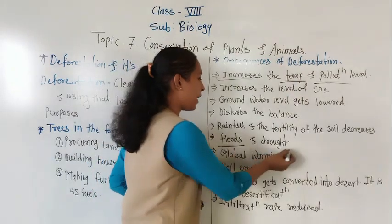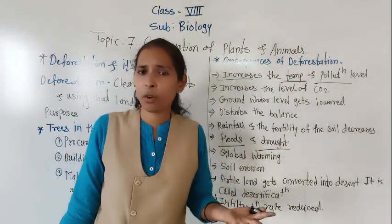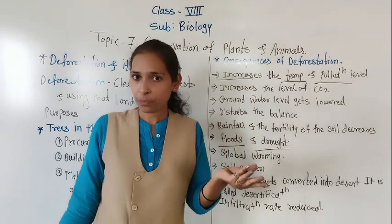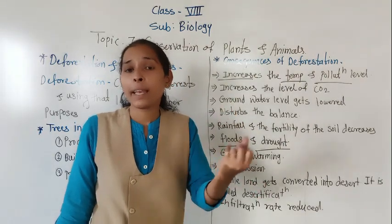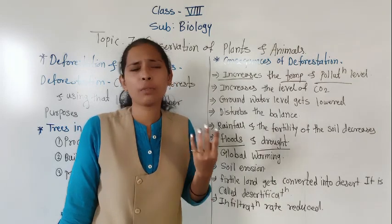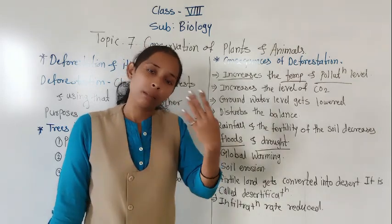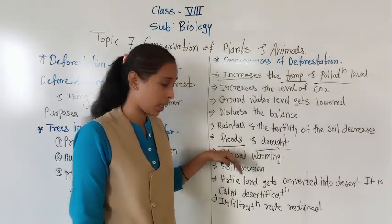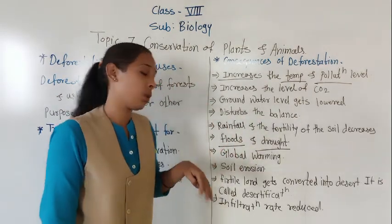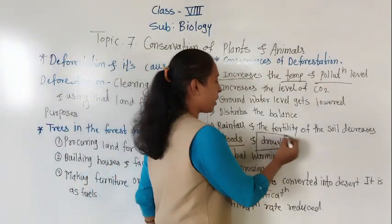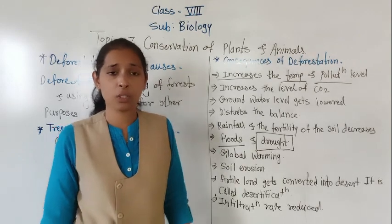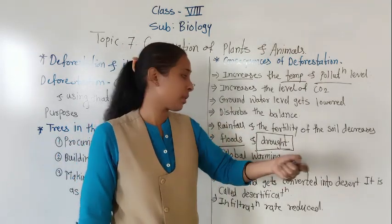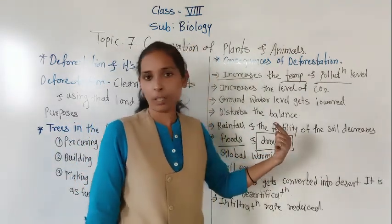Next are floods and droughts. Heavy rainfall over a longer period causes floods. If there is infertile land, it cannot absorb maximum water, so there is less absorption of water into the ground, the water level in rivers rises, which causes floods. Opposite to that is drought — if there is very little rainfall because of fewer trees, it causes droughts. Droughts also further decrease the fertility of the soil.